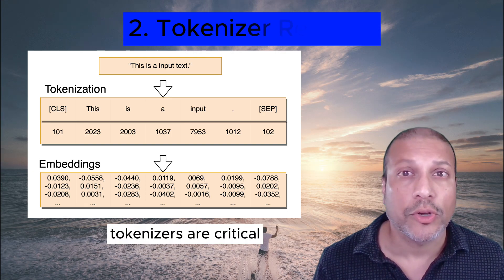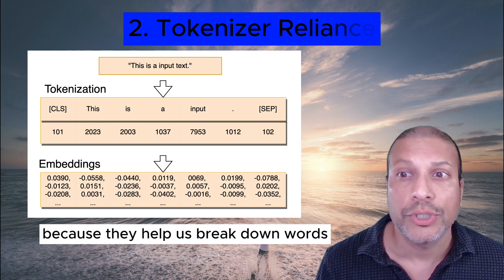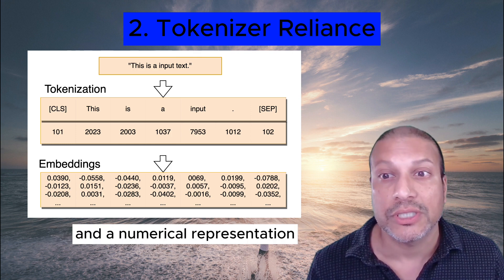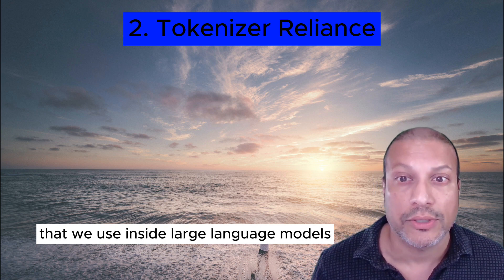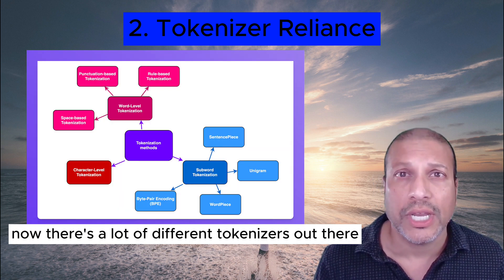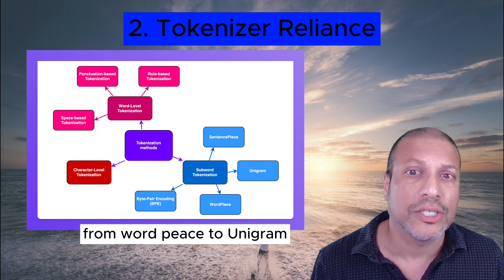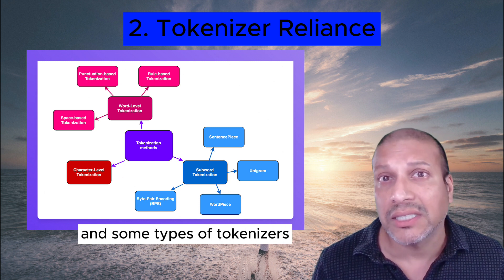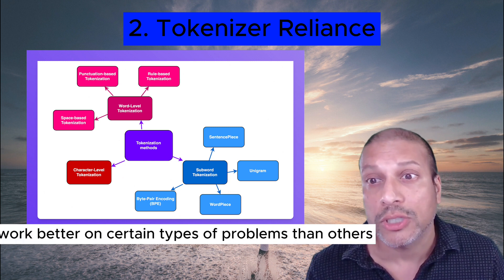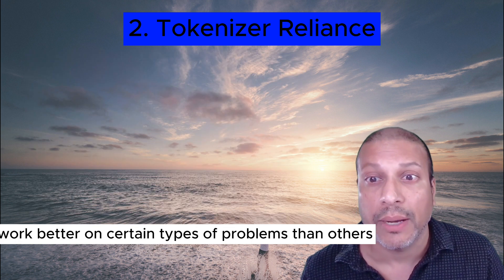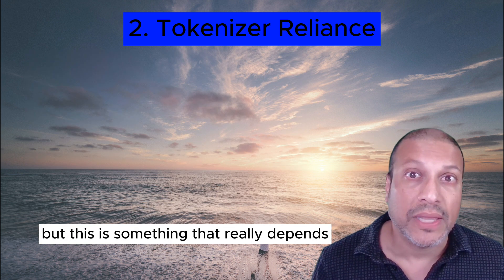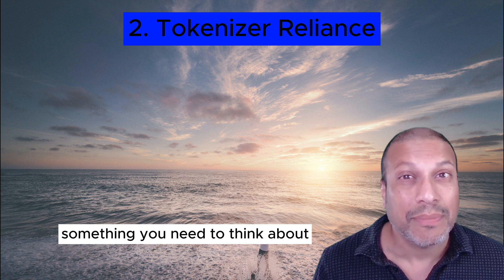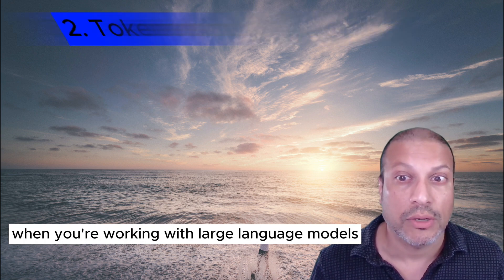Tokenizers are critical because they help us break down words into smaller units and a numerical representation used inside large language models. There are many different tokenizers out there, from word piece to unigram to byte-level approaches. Some types of tokenizers work better on certain types of problems than others, and this is something you need to think about when working with large language models.